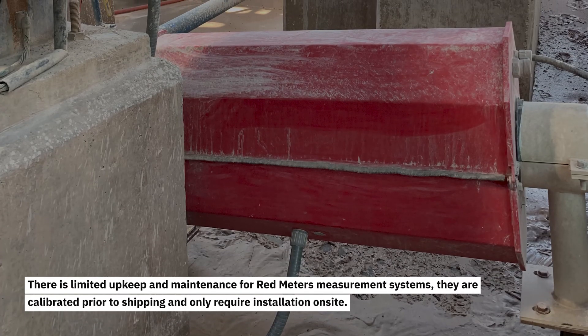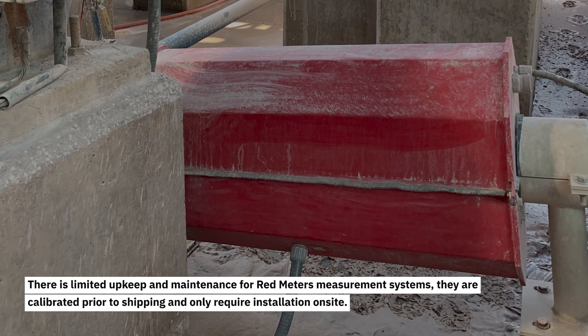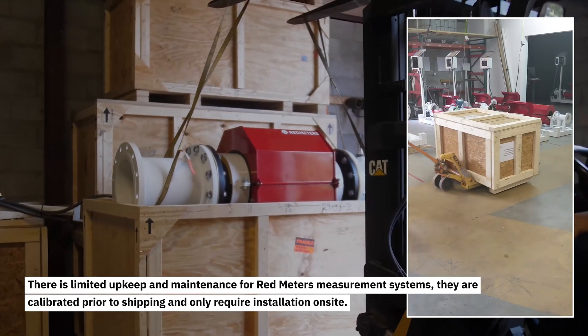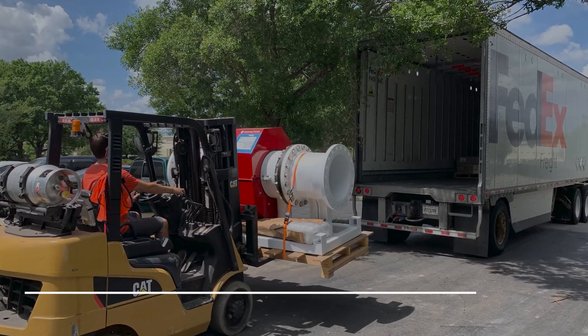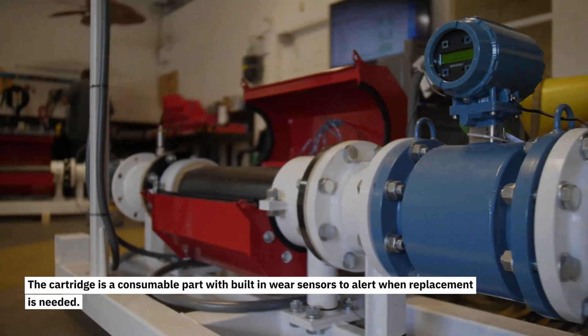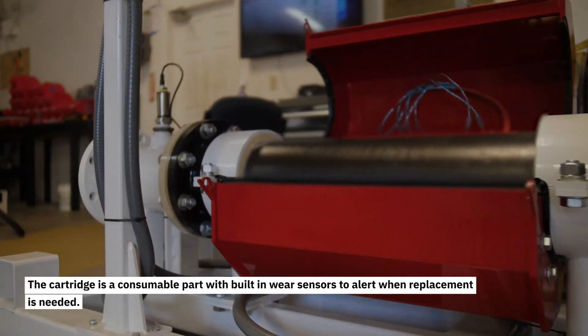There is limited upkeep and maintenance for the Red Meter's measurement systems. They are calibrated prior to shipping and only require installation on-site. The cartridge is a consumable part with built-in wear sensors to alert when replacement is needed.